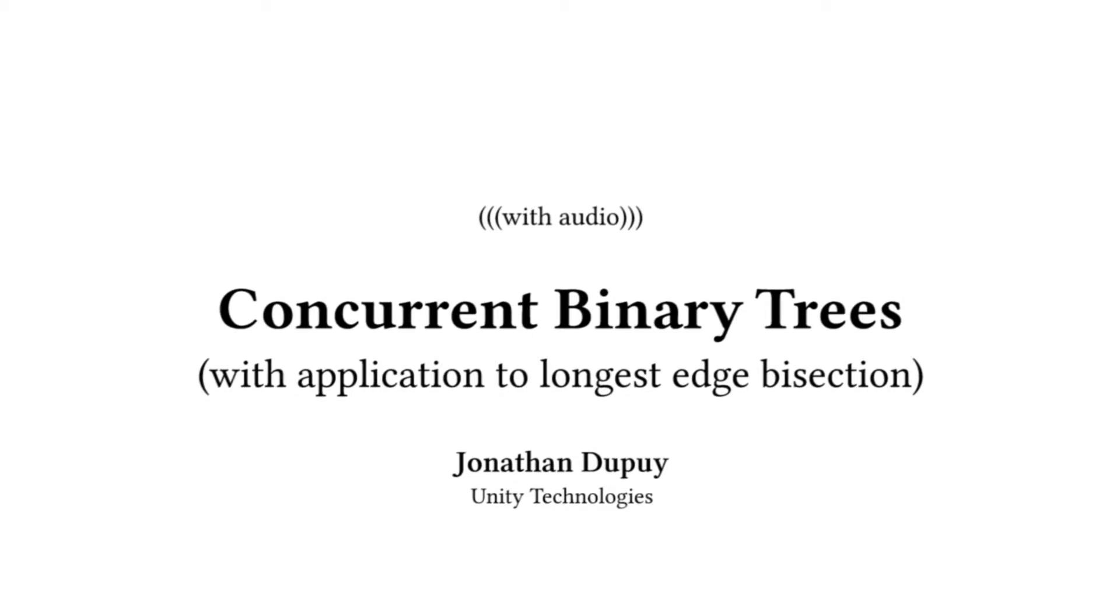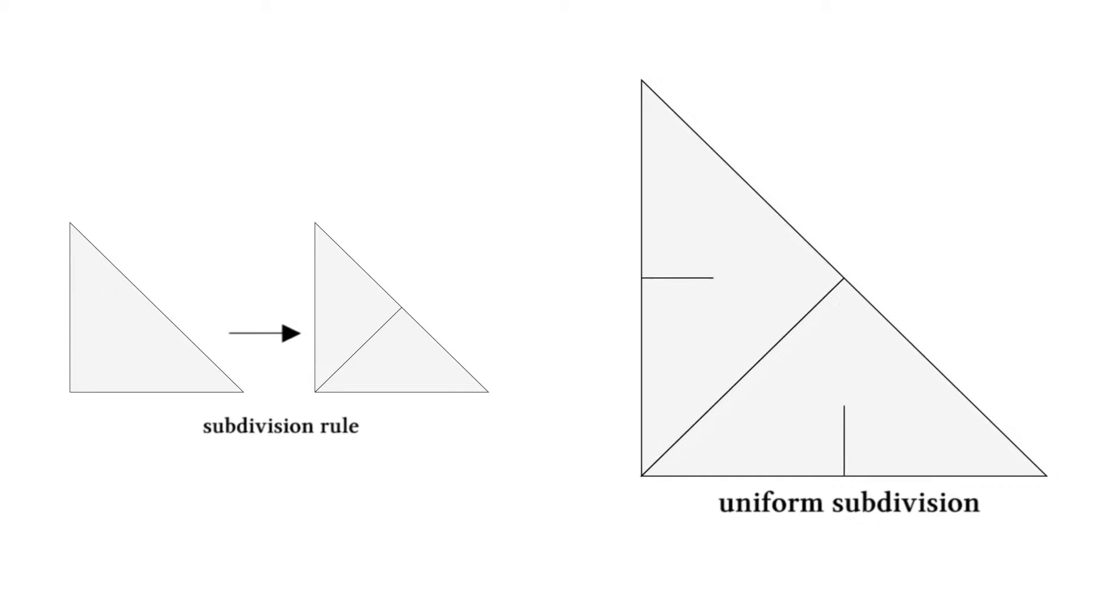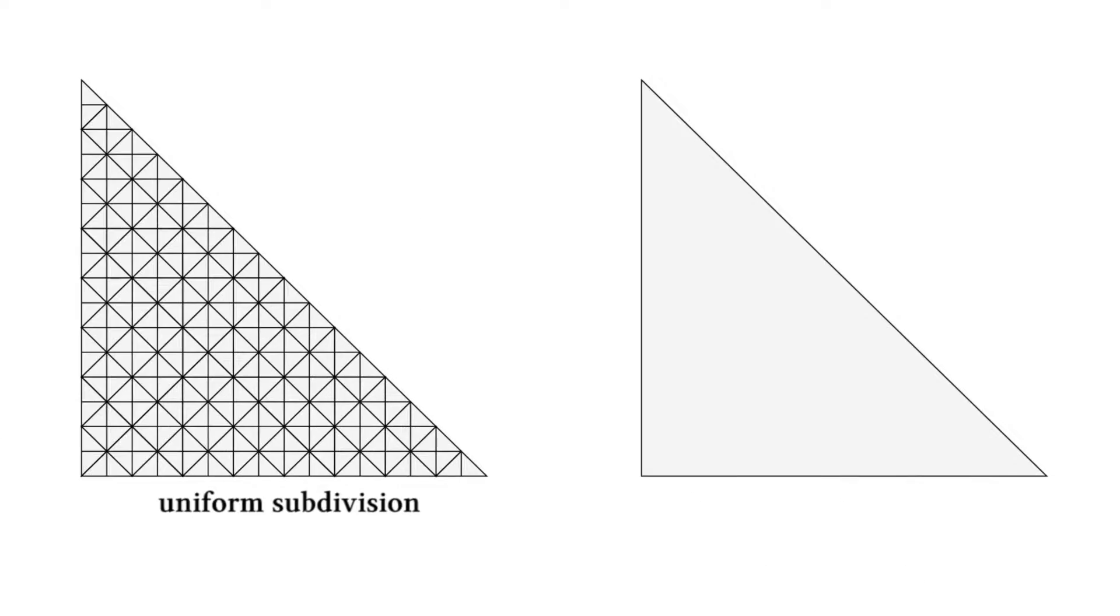Longest edge bisection, or LEB for short, is a subdivision algorithm that splits triangles along their longest edge. The subdivision can be computed uniformly or adaptively, according to some target criteria.